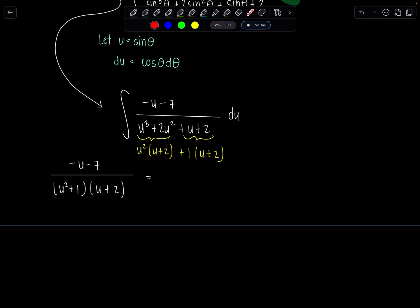Now anytime you have an irreducible quadratic in the denominator your partial fraction decomposition will have the following form. We have that factor downstairs and then you need a linear expression in terms of u upstairs, a u plus b in the numerator, plus u plus 2, that's just a linear factor so all I need is a constant c up here.